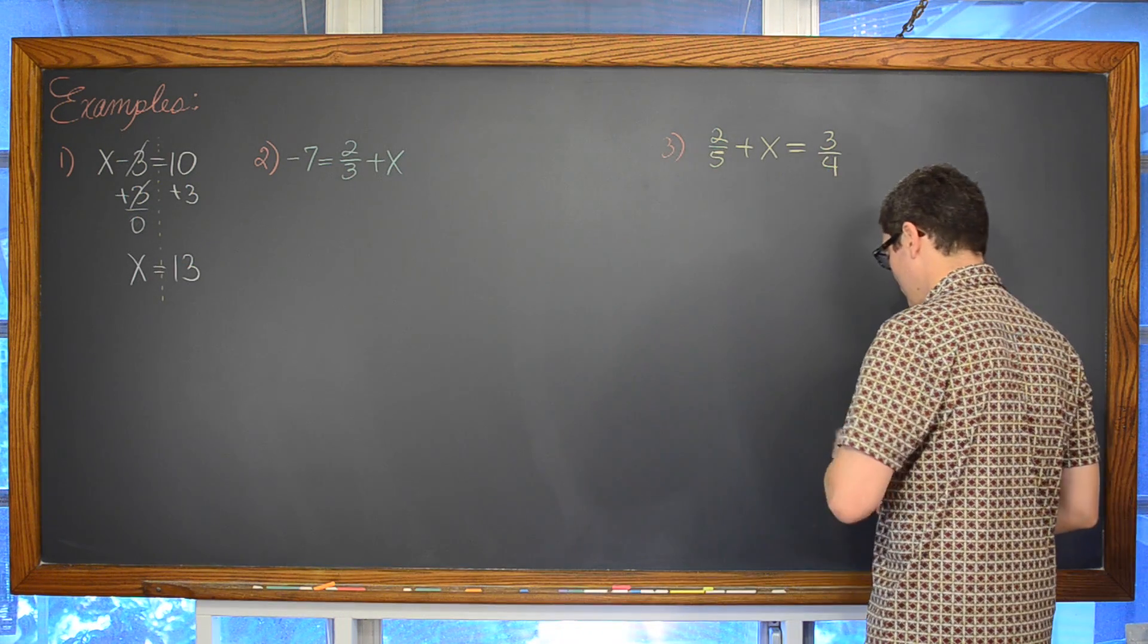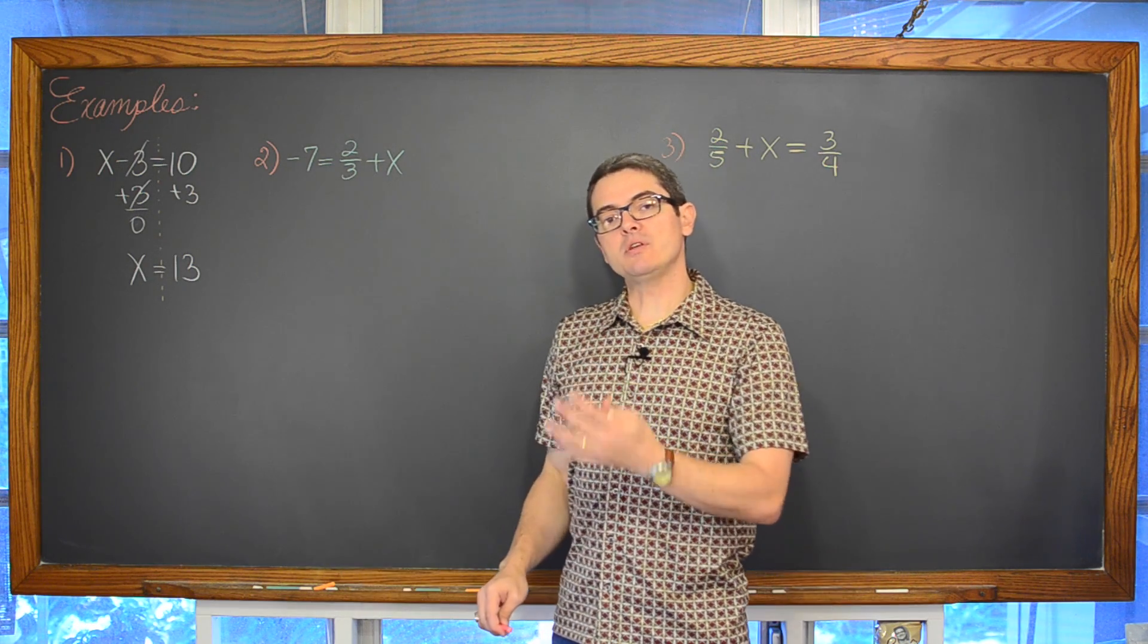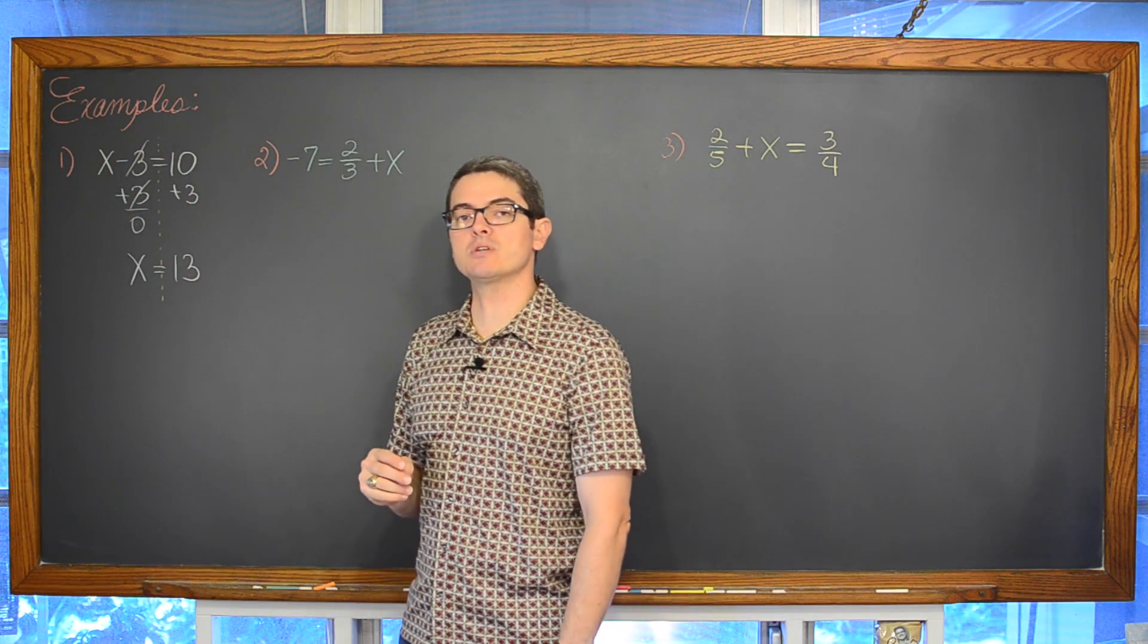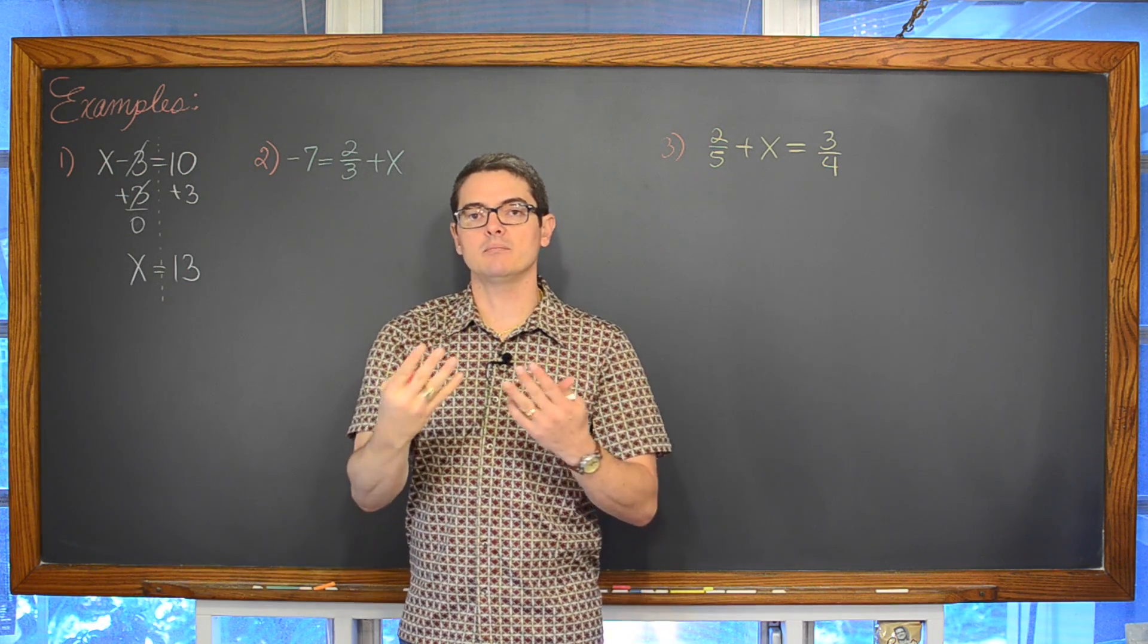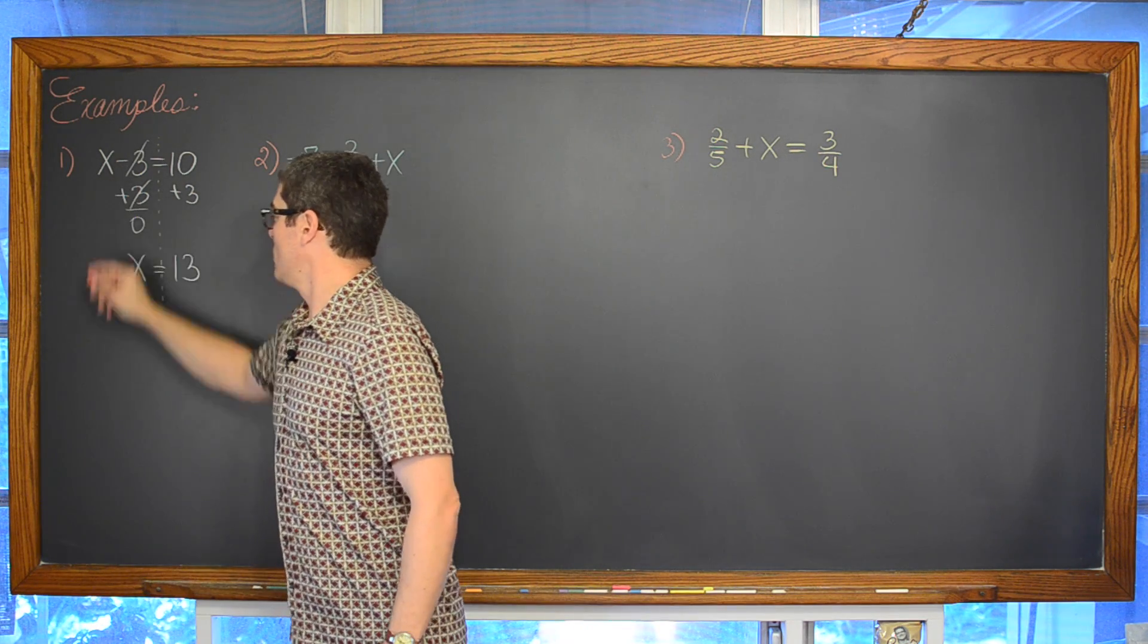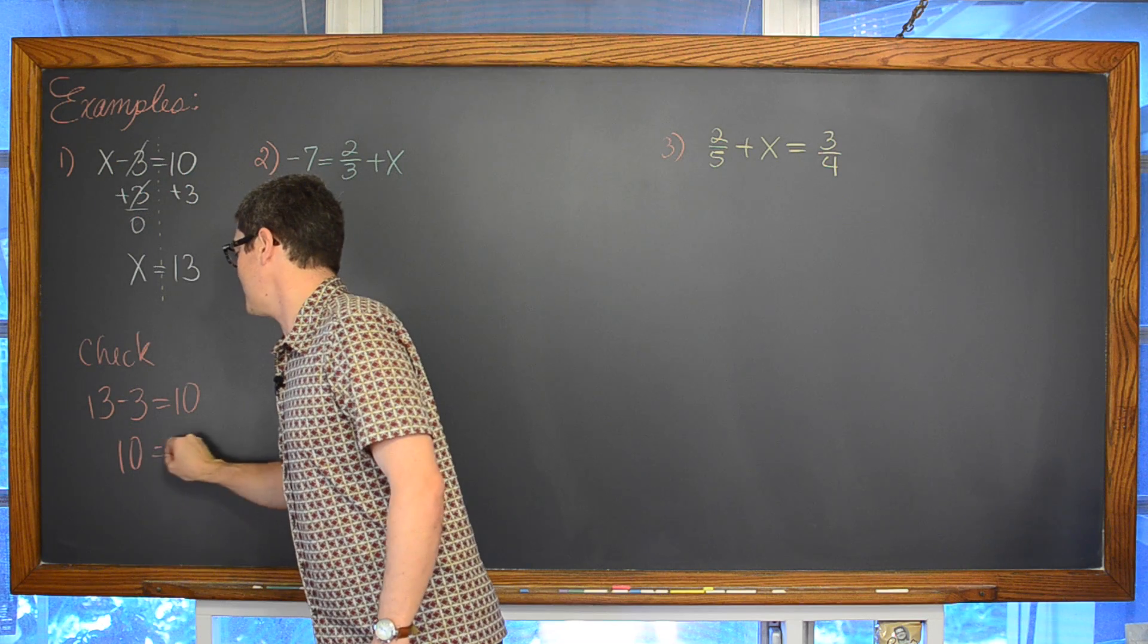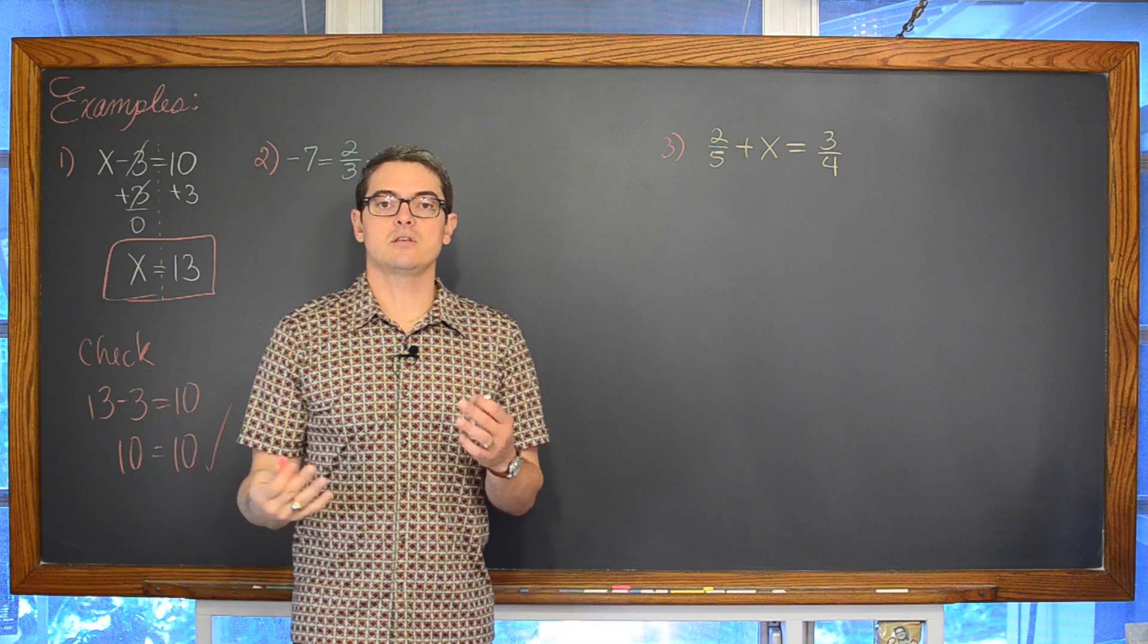Now the absolute wonderful thing about equations when you do these on your quiz or on your test for your teacher you can check your own work. If you believe that 13 is the solution then what that means is when you plug a solution into an equation the two sides become equal. It becomes a true statement. So if we think that 13 is the answer we can say hey let's check this. So we have 13 minus 3. Does that indeed equal 10? And absolutely yes it does. So this is our final answer. X is equal to 13.